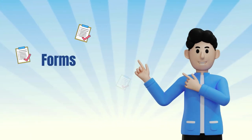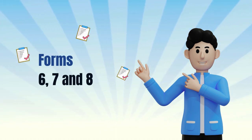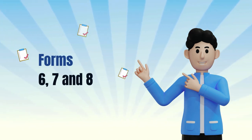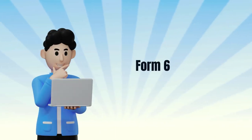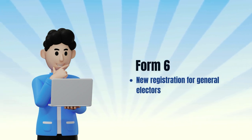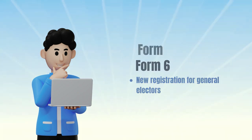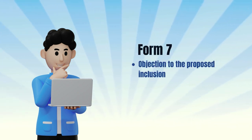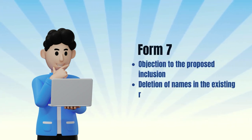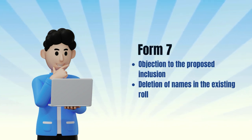Here we talk about Forms 6, 7, and 8. Form 6 is used for new registration for general electors. Form 7 is for objection to the proposed inclusion or deletion of names in the existing electoral role.